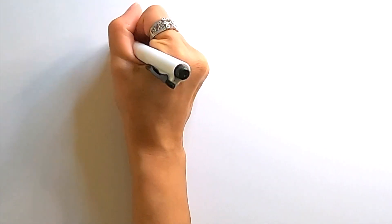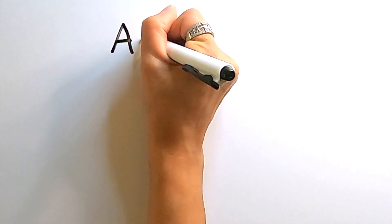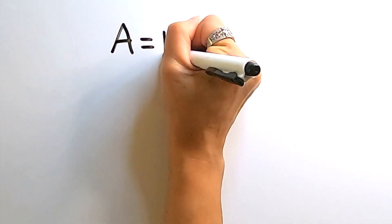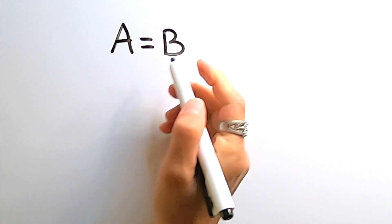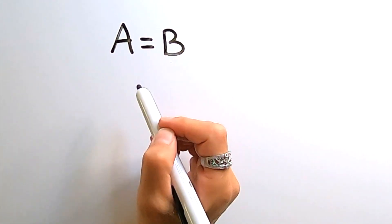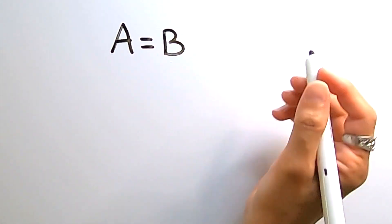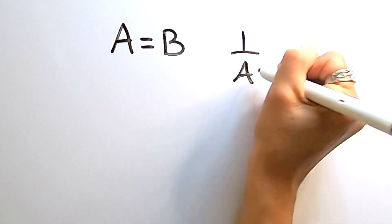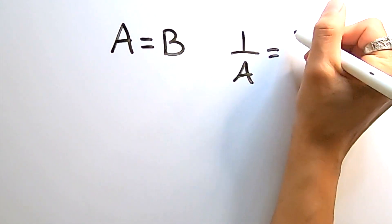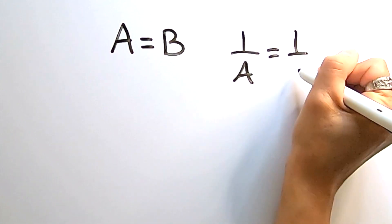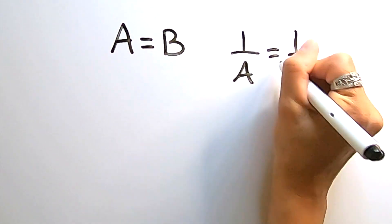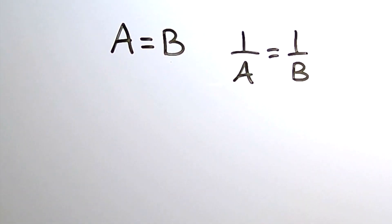When two variables are on opposite sides of the equal sign, both on top or both in the numerator, or both on the bottom, both in the denominator, but on opposite sides of the equal sign, they are directly related to each other, meaning they have a linear relationship.